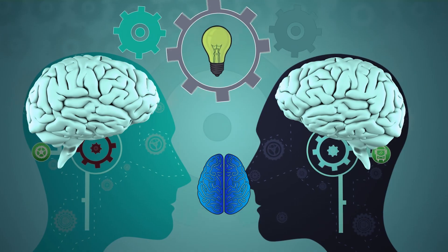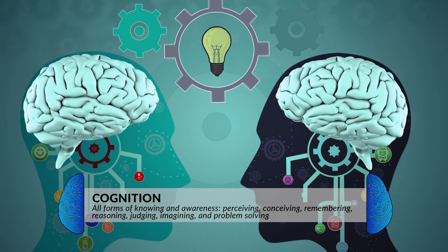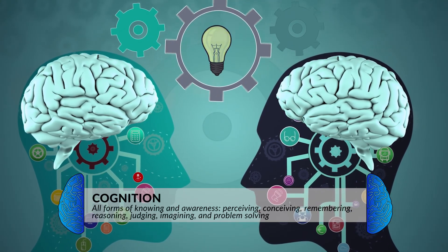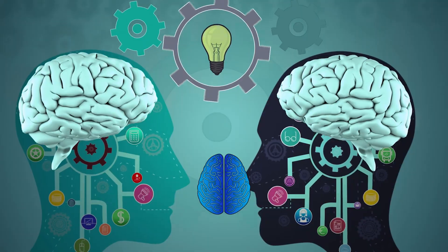When talking about thinking, we are talking about cognition. According to the American Psychological Association, cognition is all forms of knowing and awareness, such as perceiving, conceiving, remembering, reasoning, judging, imagining, and problem solving.